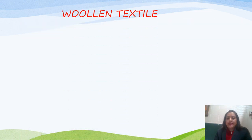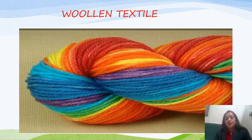The next agro-based industry is woolen textile. Woolen textile takes wool as a raw material and woolen textile mills are mostly located in Amritsar, Ludhiana, Panipat, Kanpur, Mumbai, Mirzapur, Jamnagar, and Srinagar. That is why most of the woolen clothes we get come from these places, and that is why these places are famous for woolen textile.